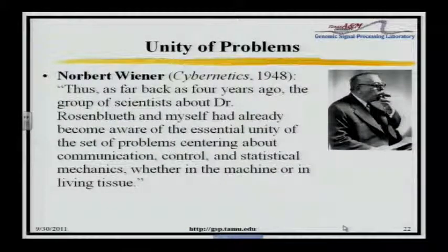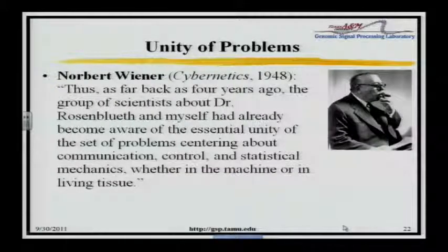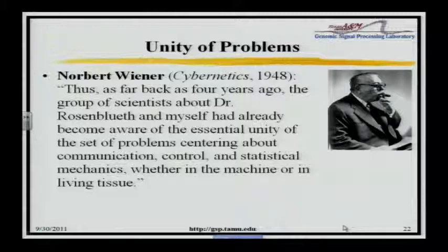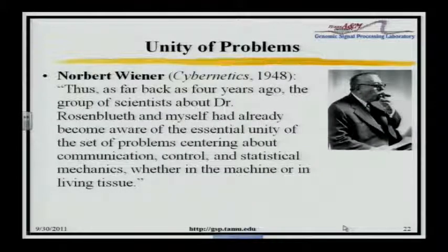Here's the quote from Wiener, 1948, from Cybernetics: 'As far back as four years ago, the group of scientists about Dr. Rosenbluth and myself had already become aware of the essential unity of the set of problems centered about communication, control, and statistical mechanics, whether in a machine or a living tissue.' Wiener recognized this because he knew both systems theory and biology. Waddington didn't realize it because he didn't know systems theory, but if you read Waddington, it's obvious — just reading him tells you you're in systems theory.